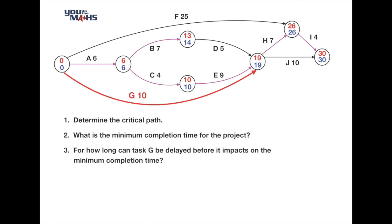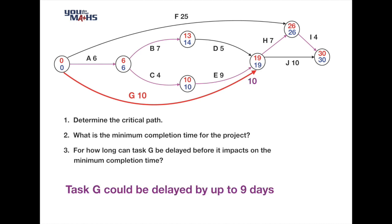Our final question is how long task G can be delayed before impacting the minimum completion time. Task G takes 10 days and needs to reach its node by 19 days, leaving a 9-day gap between how long we can take and when we must leave that node. Therefore task G can be delayed for up to 9 days without affecting the minimum completion time.